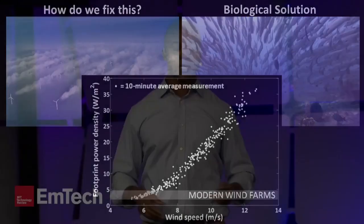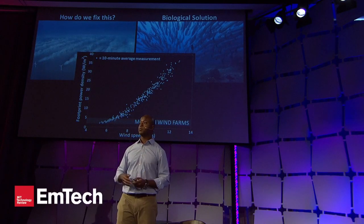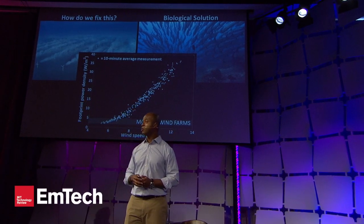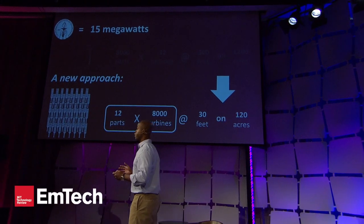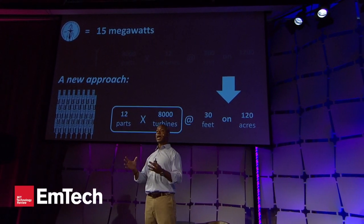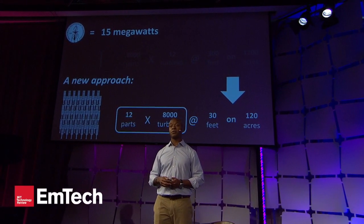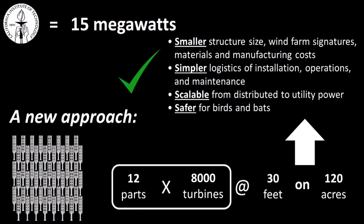On this next slide, you're going to see the power produced at our site as a function of wind speed. You can see current technology in the gray band at the bottom, and the performance of these bio-inspired wind farms — and as you can see, we can do up to a factor of 10 better. What that means for our thought experiment is we can reduce both the height and the size of these wind farms by a factor of 10. In turn, we can solve all of those problems with a technology that's smaller, simpler, scalable, and also safer for wildlife.